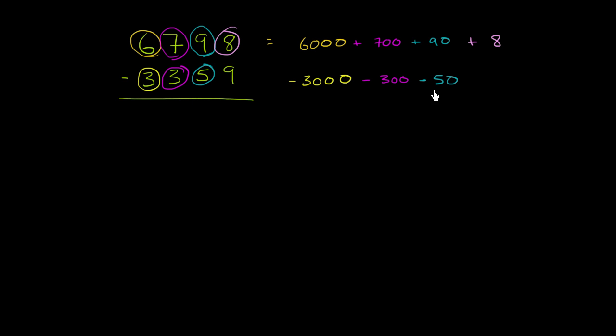A 5 in the tens place is just 50 minus 9. Minus 9. So here, we're just explicitly showing what those place values represent. A 6 in the thousands place is 6,000. A 3 in the hundreds place is 300.